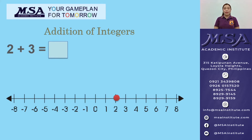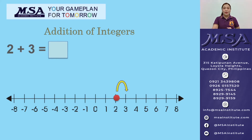One thing to remember: if you are adding a negative number, you move to the left. But if you are adding a positive number, you move to the right. So here we need to add positive 3, so we need to move to the right — 1, 2, 3. We end up at 5, so the sum is equal to 5.